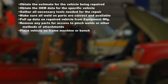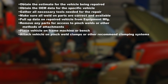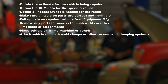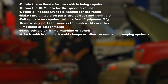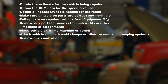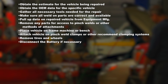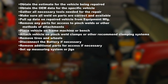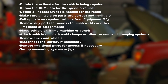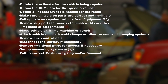Step 7: Place vehicle on frame machine or bench. Step 8: Attach vehicle on pinch weld clamps or other recommended clamping systems. Step 9: Remove tires and wheels. Step 10: Disconnect the battery if necessary. Set up measuring systems or jigs, then pull to correct mash, sway, sag, and/or diamond.